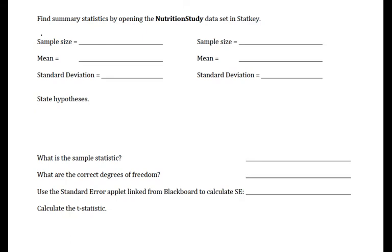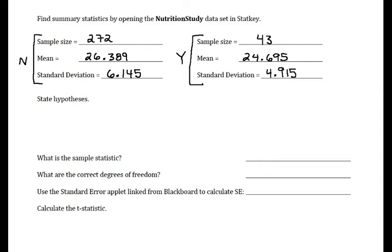And I'll choose to just follow the same order in which they showed up in StatKey and say that these go with my no and these go with my yes. We definitely need to keep track of that. So my sample size for no is 272, a lot more non-smokers than smokers. The mean BMI is 26.389, and my standard deviation is 6.145. The sample size for my smokers is much smaller at 43. Mean is 24.695, and standard deviation 4.915. So right away we can see that at least in our sample, the mean BMI actually appears to be a little bit lower among smokers than among non-smokers.